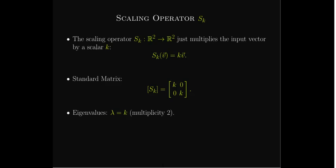Let's revisit some simple linear operators on R2 which have very simple geometric interpretations. Let's look at the scaling operator. The only thing the scaling operator does is multiply the vector times a scale factor k. This scale factor can be negative, positive, or even zero — we'll think of it as a positive number.